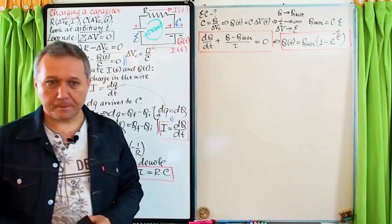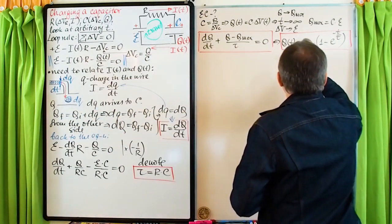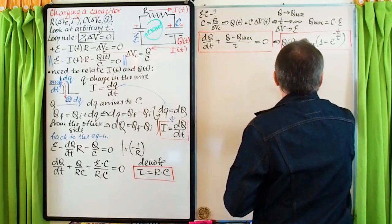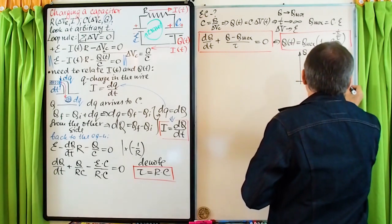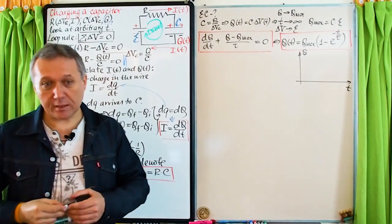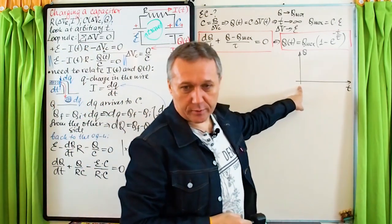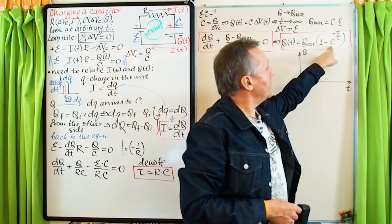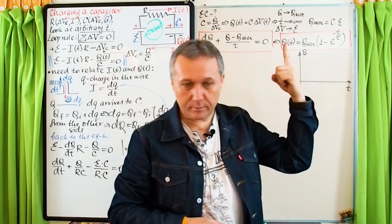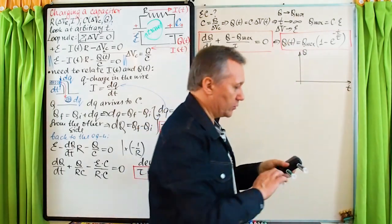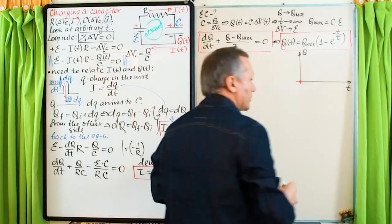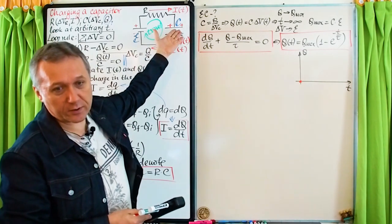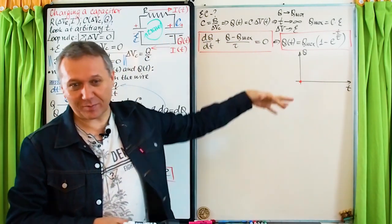Let's plot Q(t). At t = 0: the exponential is e^0 = 1, so 1 minus 1 = 0. The initial charge is zero, as expected — the capacitor was empty. As t goes to infinity, e^(−t/tau) approaches zero, so Q approaches Q_max. The function starts at zero and asymptotically reaches Q_max.